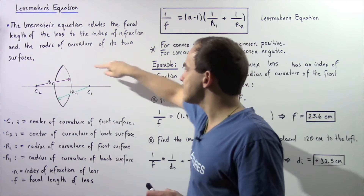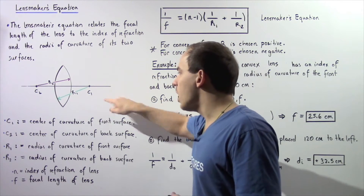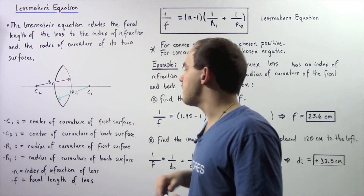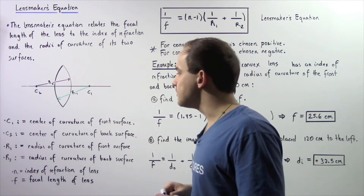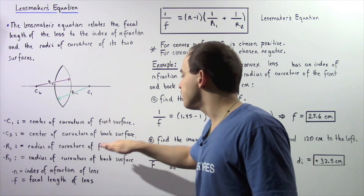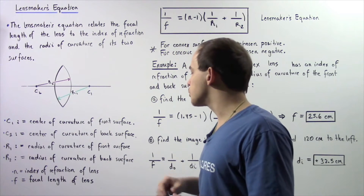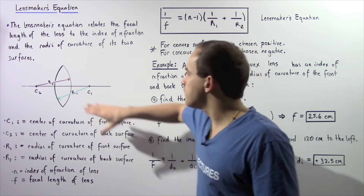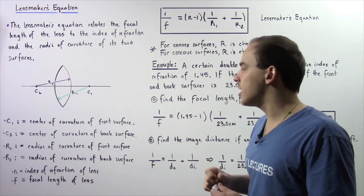Let's suppose we have the principal axis and a double convex lens. Point C1 is the center of curvature of the front surface of our lens, while point C2 is the center of curvature of the back surface. The distance R1 is the radius of curvature of the front surface, and R2 is the radius of curvature of the back surface. N is the index of refraction of the material from which the lens is made, and F is the focal length of the lens.